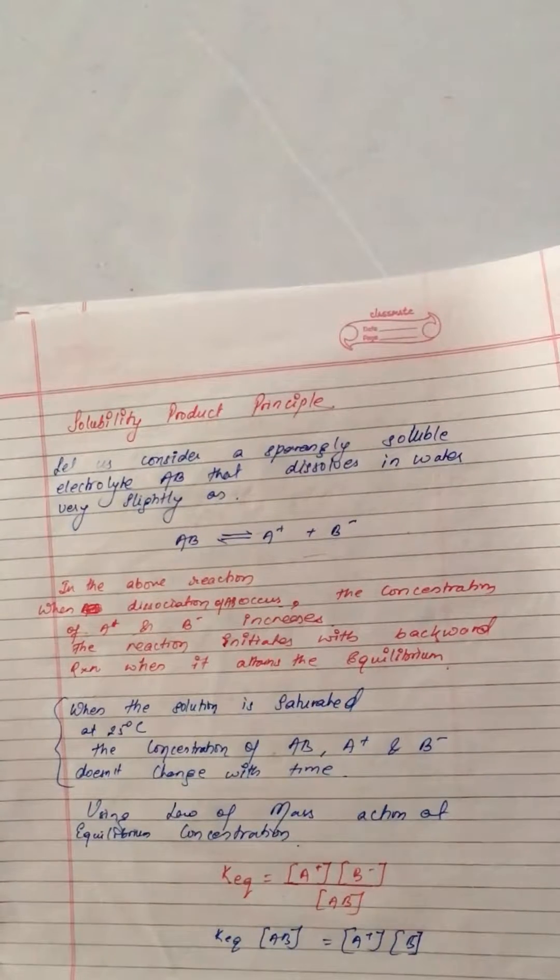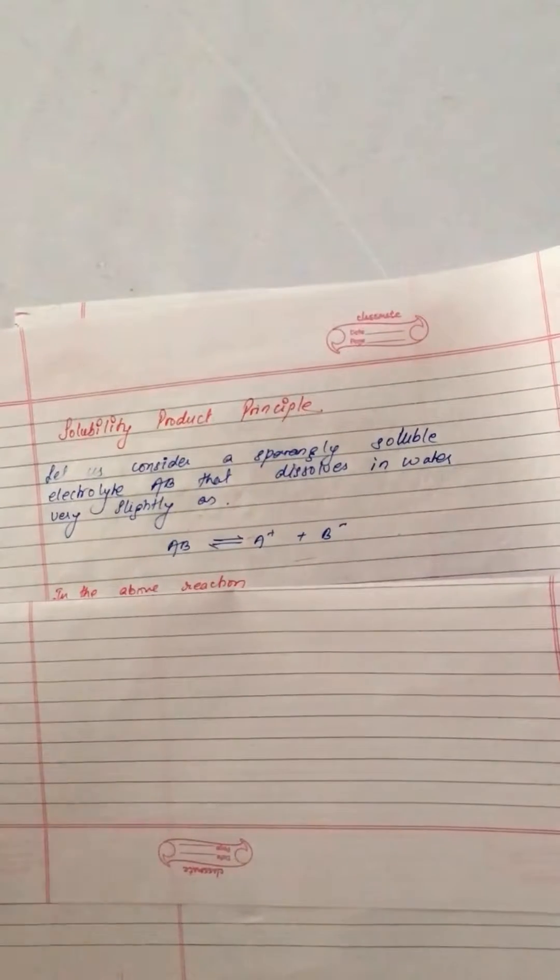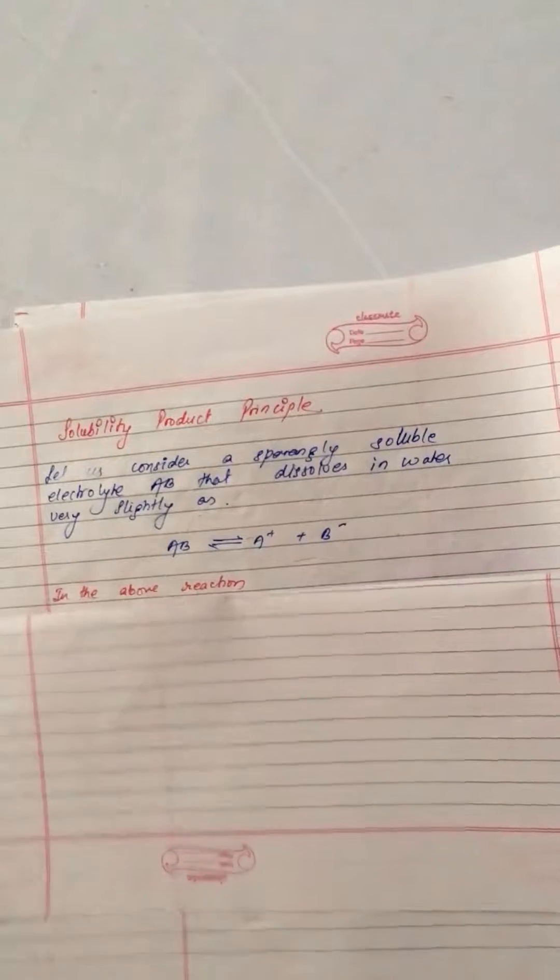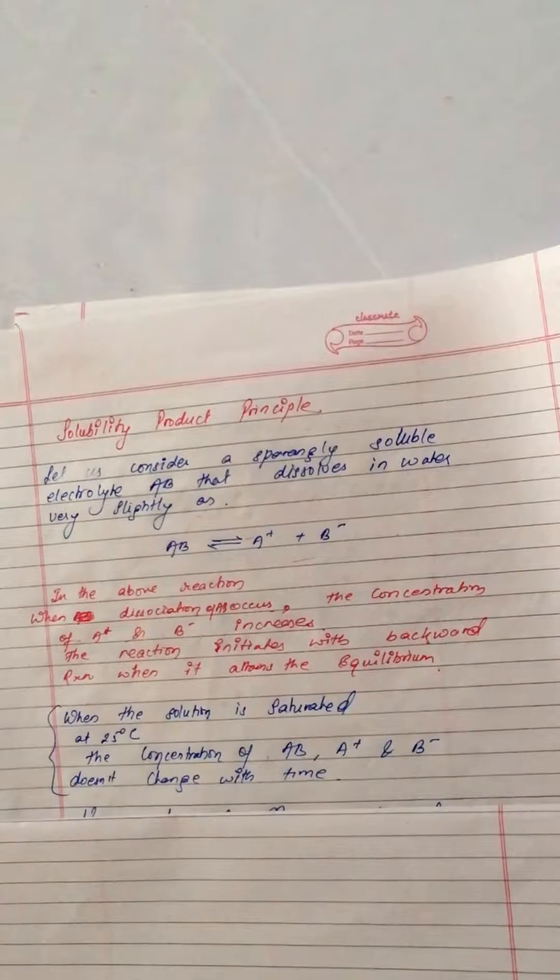Hello guys, this is me Roshan, and in this video we're going to learn about solubility product principle. Let us consider a sparingly soluble electrolyte AB that dissolves in water very slightly as AB converts into A plus and B minus.